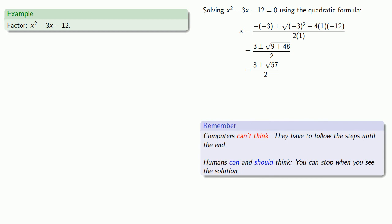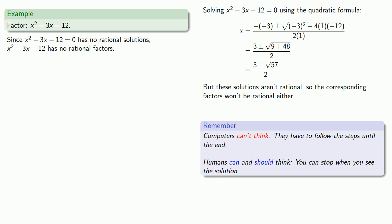Once again, the important idea here is that computers can't think, people should. The thing to notice here: 57 is not a perfect square, so whatever the solutions are, they are not going to be rational, so the corresponding factors won't be rational either. Again, we can conclude, since our equation has no rational solutions, our polynomial has no rational factors.